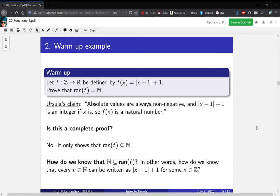So the other direction would say every natural number can be written as |x - 1| + 1 for some x in the integers. So can every natural number actually get hit or actually get represented in this way? That's what Ursula was missing.